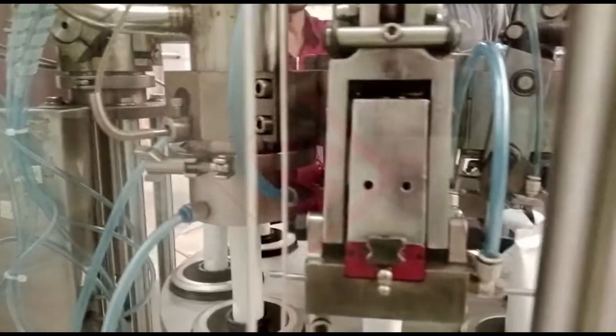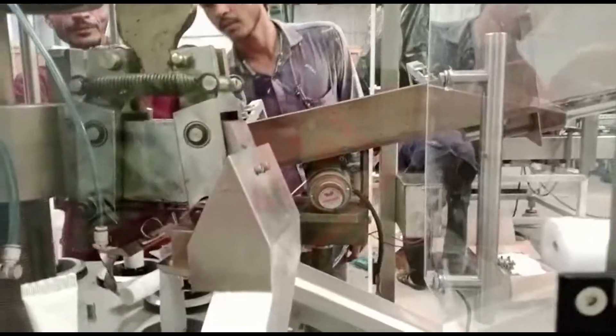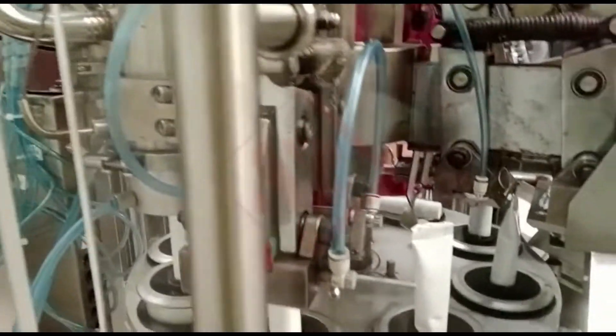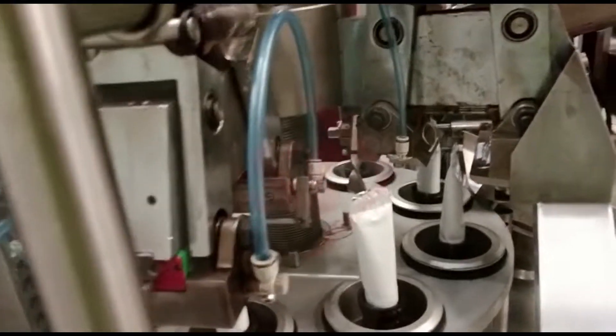Coding and Marking: Some tube filling sealing machines are equipped with coding and marking systems that allow for the printing of batch numbers, expiry dates, or other product-related information directly onto the tubes.